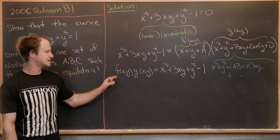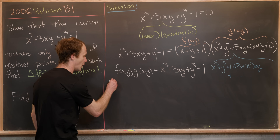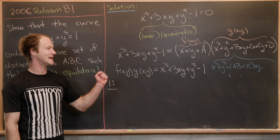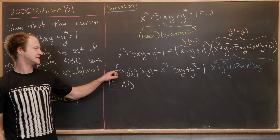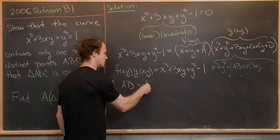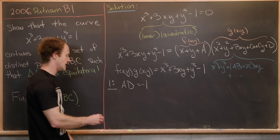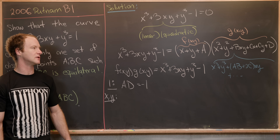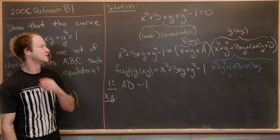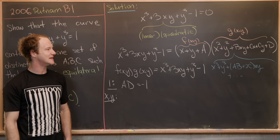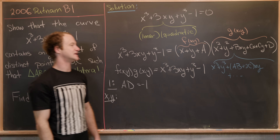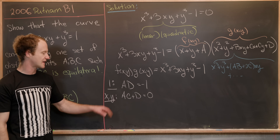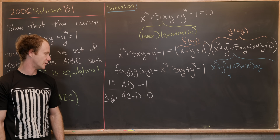Extracting the constant term from both sides: the only constant in f · g is a · d, and on the right-hand side that equals −1, so ad = −1. For the coefficient of x (and by symmetry y): that gives ac + d = 0. For the coefficient of x² (and y²): that gives a + c = 0. For the coefficient of xy: ab + 2c = 3.